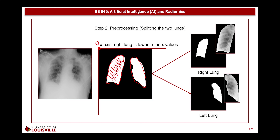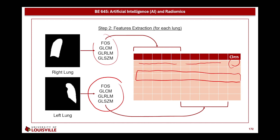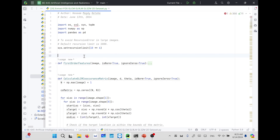The X-axis starts from zero, so coordinates with lower X values will correspond to the right lung. Now we have two masks — each multiplied by the original image to extract the right lung and left lung respectively — and each will be used in the feature extraction process. Each lung produces a set of features such as first order, GLCM, and so on. The right lung features are added to the beginning of the table and left lung features to the tail, with the category appended at the end. Each record will contain the features of both lungs and the corresponding category.